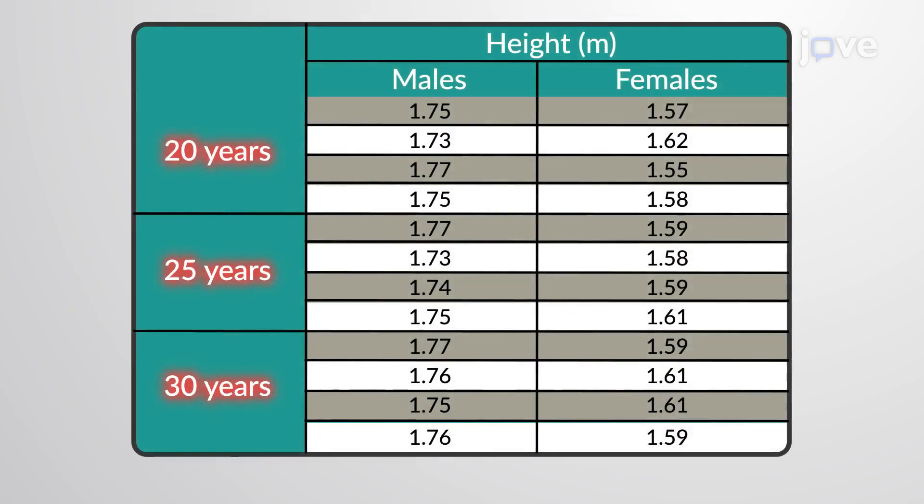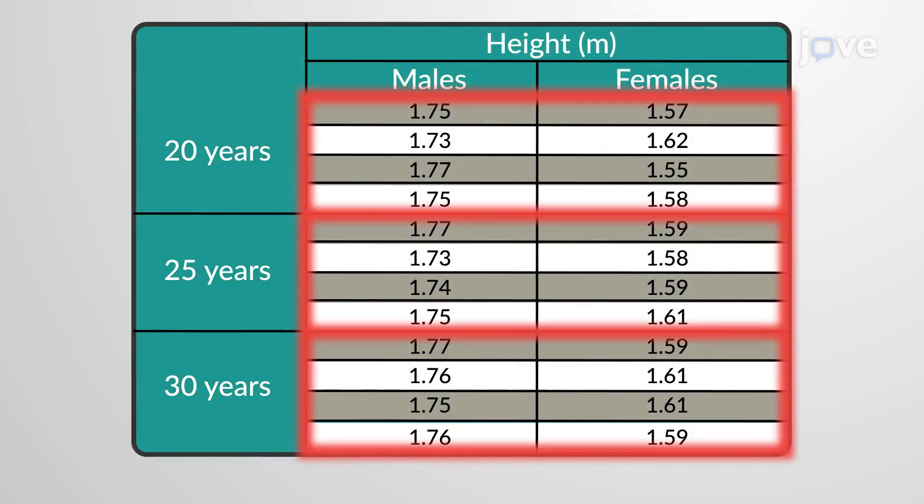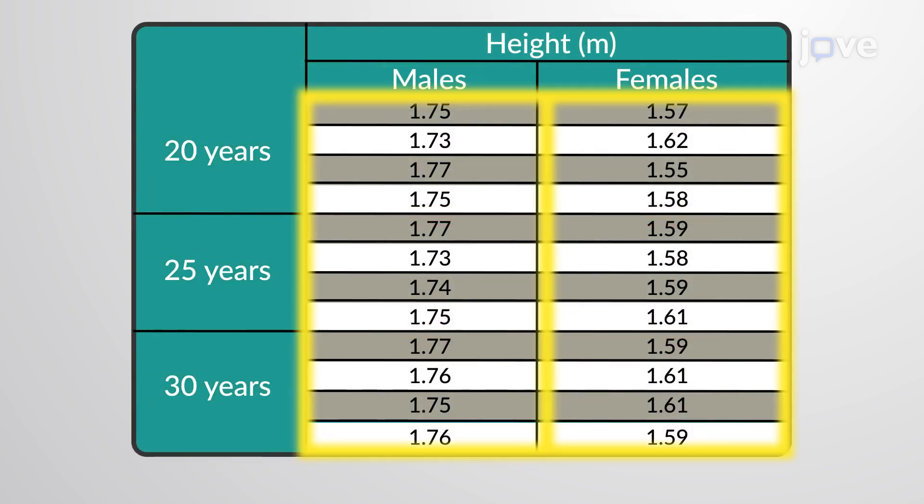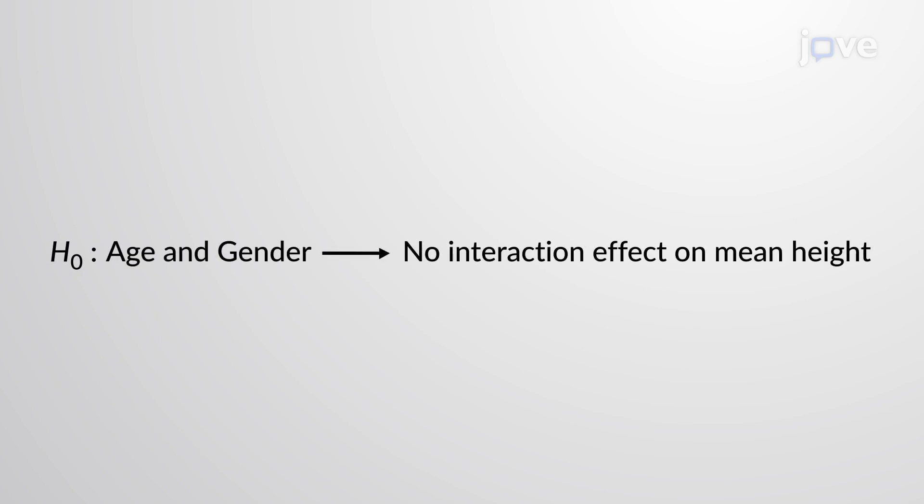Age is the row factor and gender is the column factor. State the null hypothesis that age and gender show no interaction effect on the mean height.